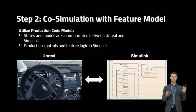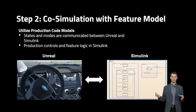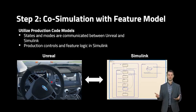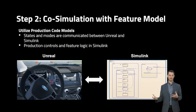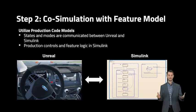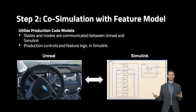The next piece was integrating Unreal and MATLAB and Simulink. MATLAB and Simulink has all of our feature requirements and executable requirement models, as well as some of our production code. In MATLAB and Simulink, we can auto-generate code from those models and use it in production. So by combining these two, Unreal is the visualization engine, but you can also co-simulate and test and validate your production code models all at the same time.